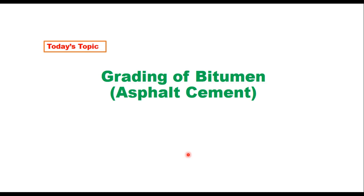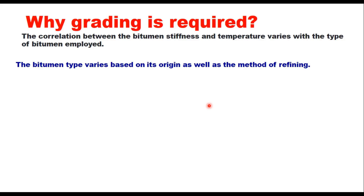Hello friends, welcome again to my channel. Today we will discuss grading of bitumen. Bitumen is also called asphalt cement in the US. It is important for bitumen to be graded before it can be used in a construction project, and this grade is primarily based on the stiffness of the bitumen at predefined temperatures. The correlation between bitumen stiffness and temperature varies with the type of bitumen employed, and the bitumen type varies based on its origin as well as the method of refining.